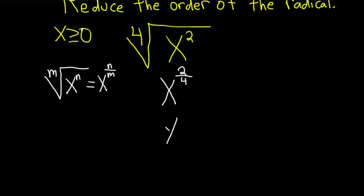So this is where the reduction takes place: x to the 1 over 2. Now that we've reduced the fraction, we have to go back to radical form.